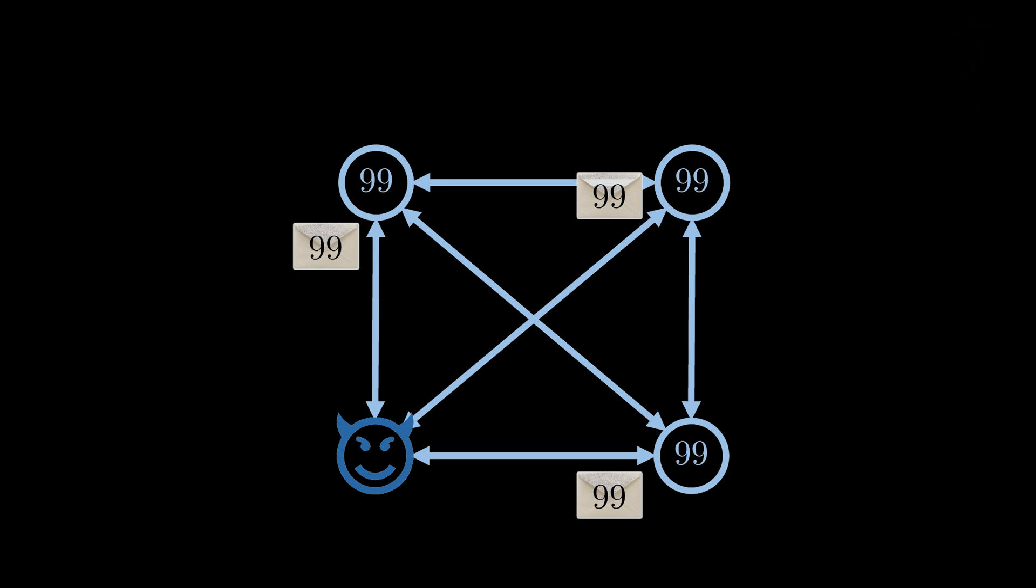In general, there is no solution to this problem. So, we have to find a different validity property for Byzantine agreement. We just saw that we cannot insist on agreeing on the input value of any node. Can we instead make it a requirement to agree on the input value of a correct node?